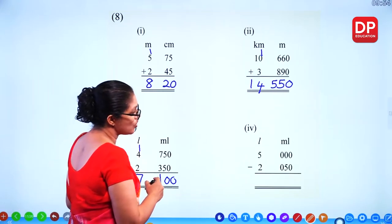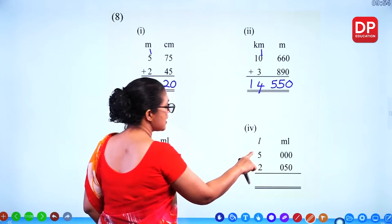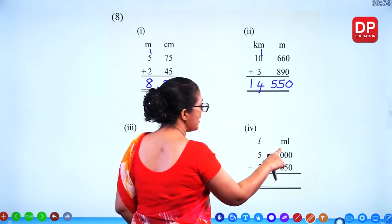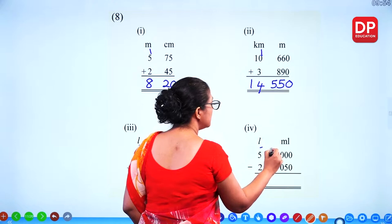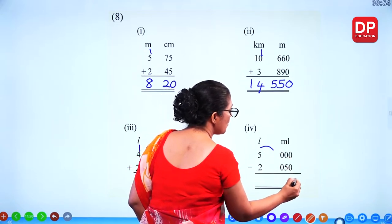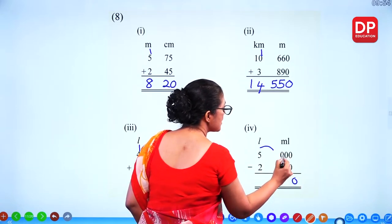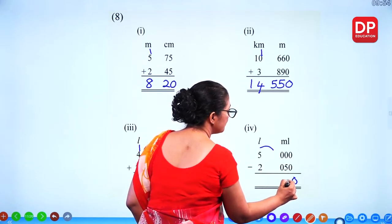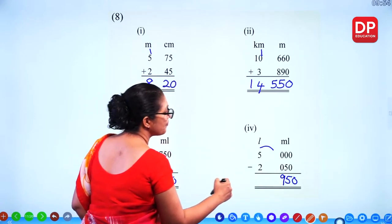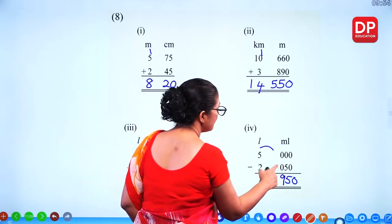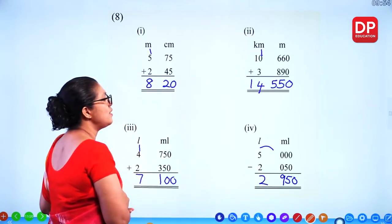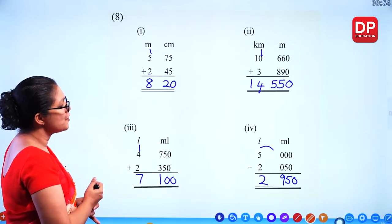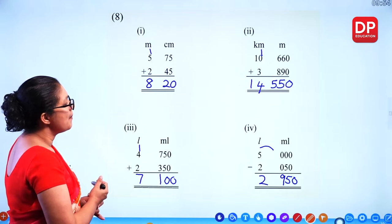Now for subtraction of liquid measurements: we can't subtract, so take 1 from the next unit. That gives 10 minus 5 = 5 millilitres. The next digit becomes 9, and 4 minus 2 = 2. The answer is 2 litres and 950 millilitres.